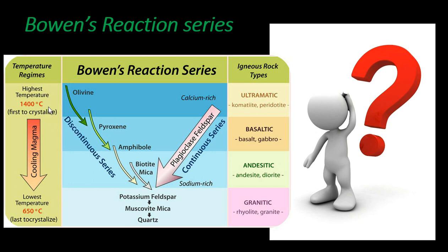These two reaction series merge and give rise to potassium feldspar, then muscovite, and then quartz. The starting crystallization temperature is 1400°C. As we go down from 1400°C, the minerals start crystallizing, with the lowest temperature shown being 650°C.